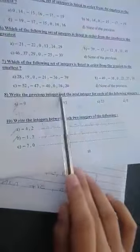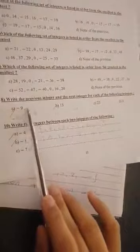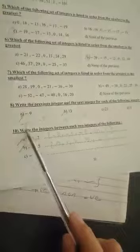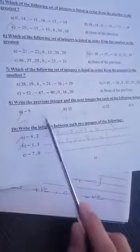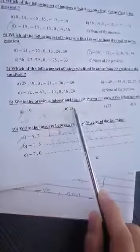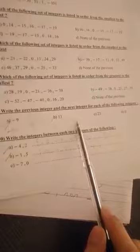Let's move to question 8. Write the previous integer and the next integer for each of the following. I want to give the previous and the next. The previous is negative 10 and the next is negative 8. Right? For 13, before the 13 is 12, after the 13 is 14. Right?